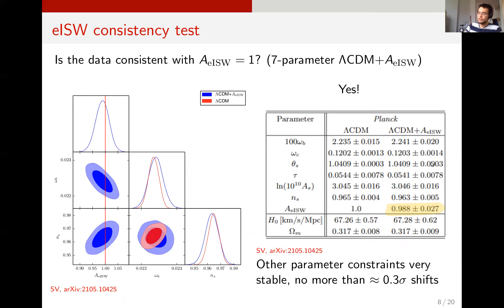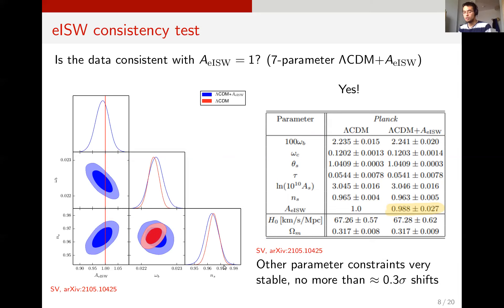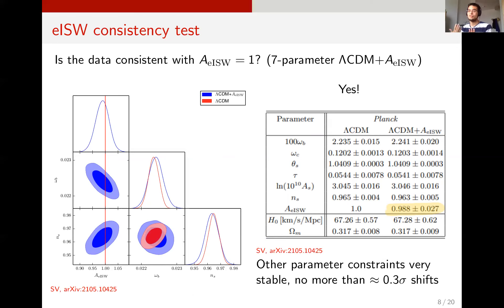Also important to note is that none of the other parameters shift considerably — the shifts are by no more than 0.3 sigma. The biggest shifts are for the two parameters most correlated with the early ISW amplitude: the scalar spectral index and the baryon density. But as you can see by eye, the shift is really small. That's a very good indication that nothing funny is happening as far as the early ISW effect is concerned.